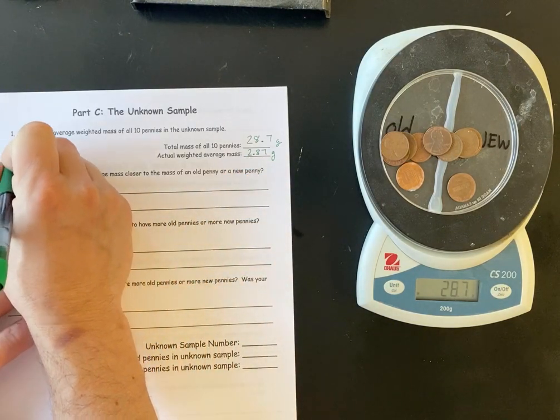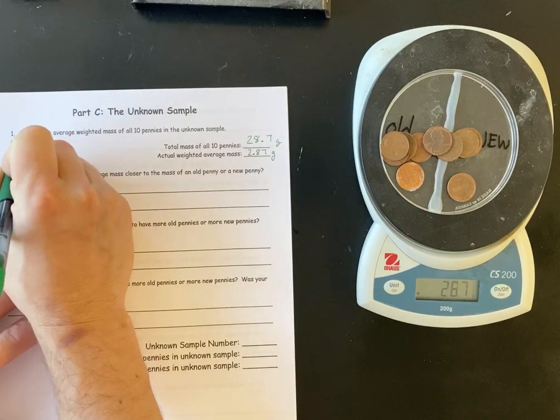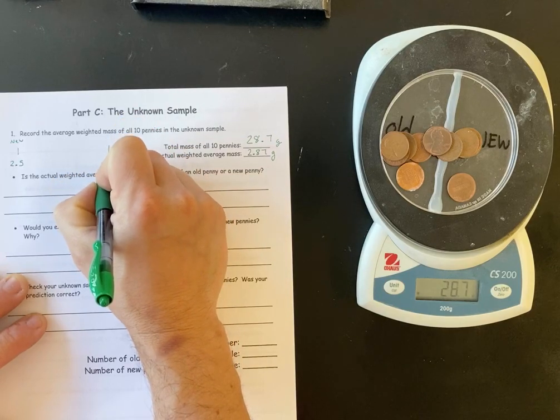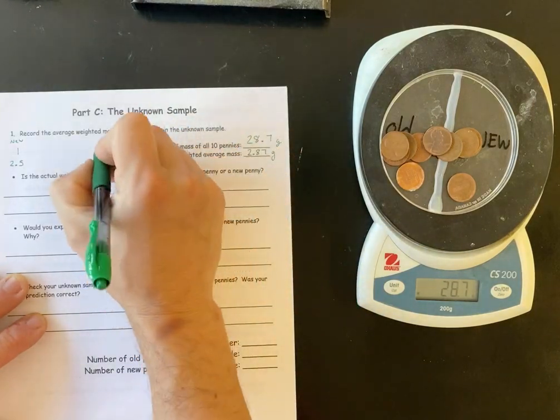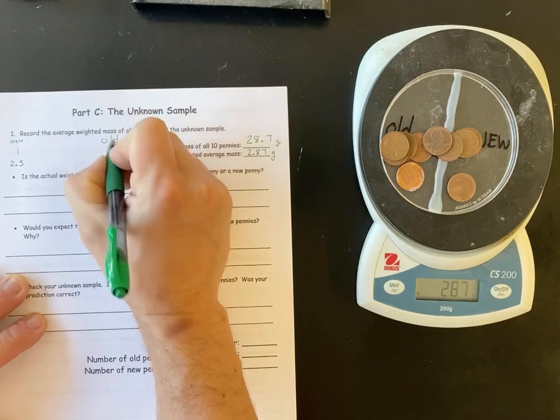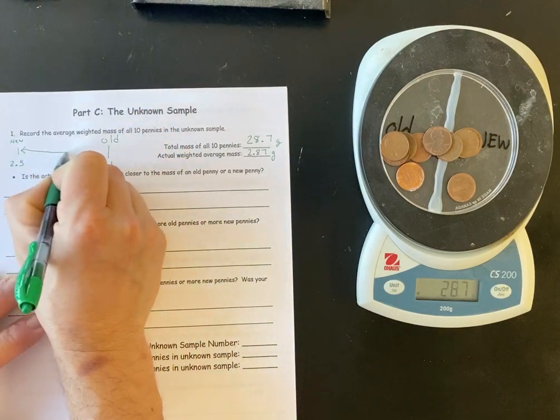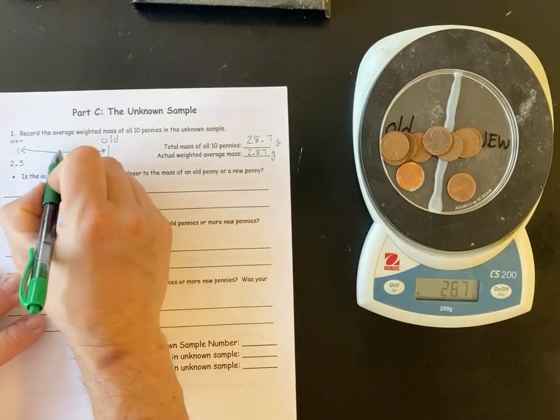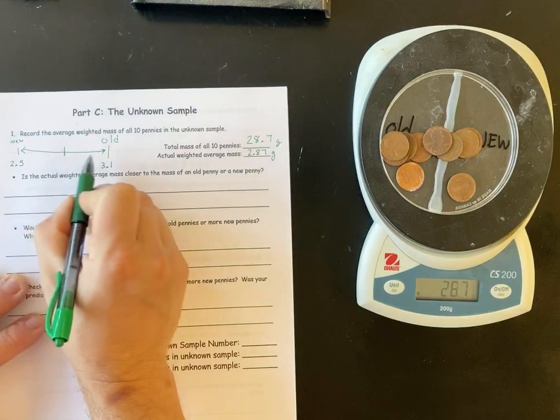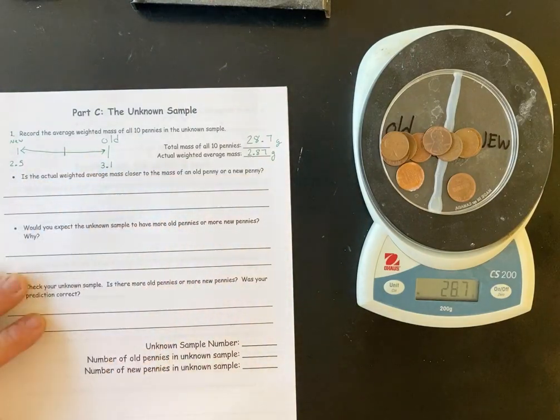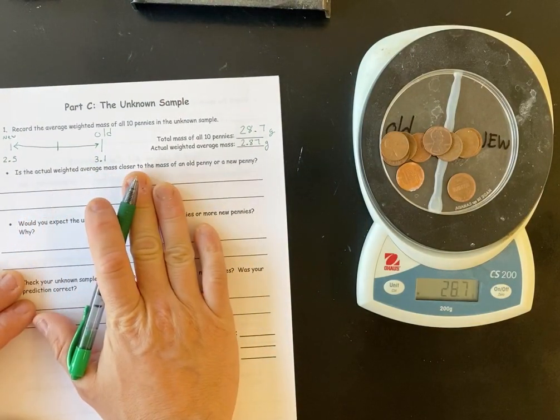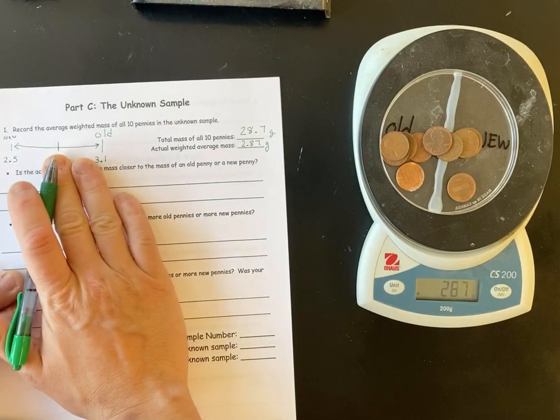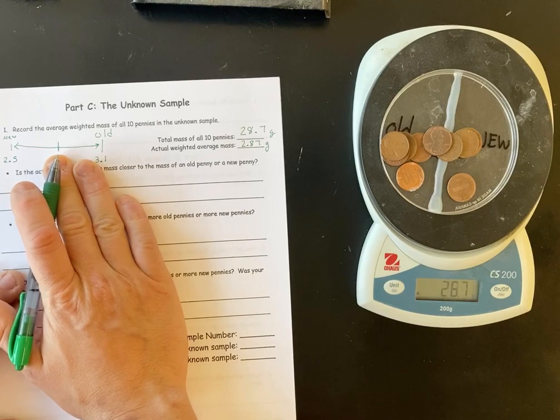And just to review the new weight was 2.5. The old weight was 3.1, 3.09, but we're rounding. And so where along this scale does this fall, does 2.8, meaning is it exactly in the middle? I'll try to estimate the middle or is it closer to this side or is it closer to that side? Well, if it's closer to 3.1, then that means there should be more old ones here. If it's closer to 2.5, then there should be more new ones. And if it's exactly in the middle, then there should be an even amount of each.